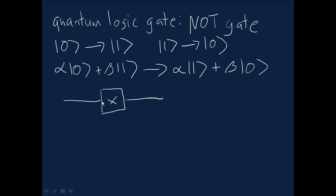So that's the quantum circuit representation of the quantum NOT gate. There's another representation, a matrix representation of the action of the quantum NOT gate.